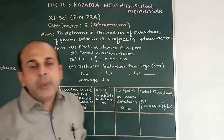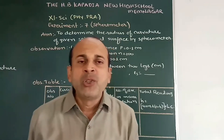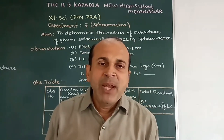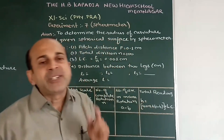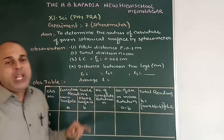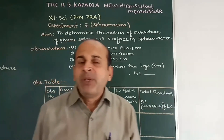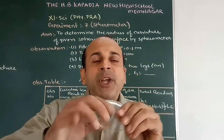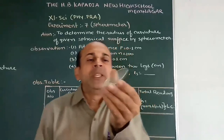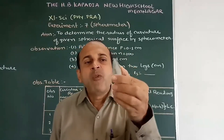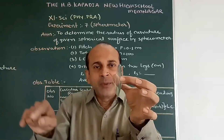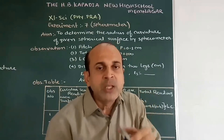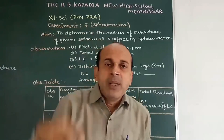The formula to find the radius of curvature is R = L² / 6H + H / 2, where L is the distance between two legs of the spherometer. We will observe the distance between the legs and find the radius of curvature of this convex surface. This is a watch glass — it is a part of a whole sphere, and we can find the radius of that sphere using the spherometer.